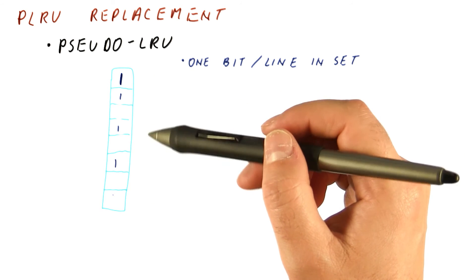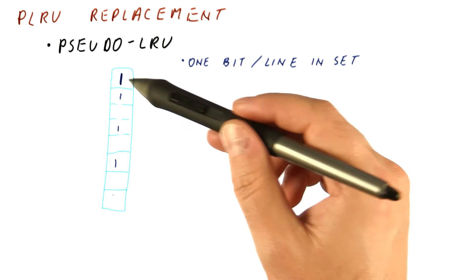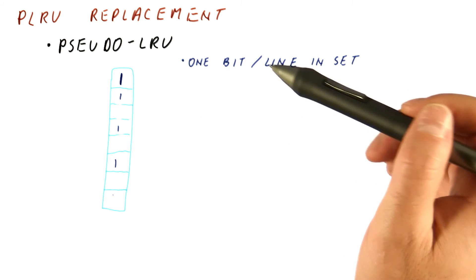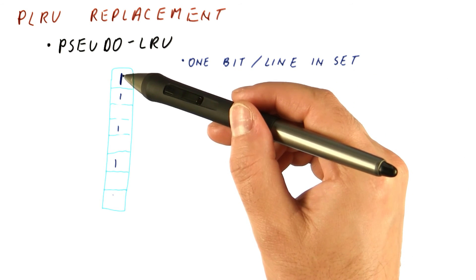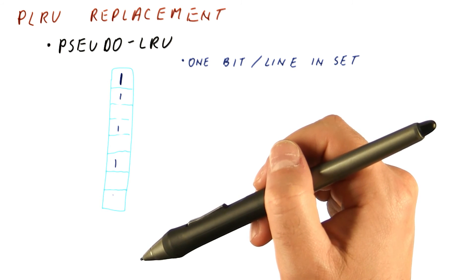This policy behaves somewhere between LRU and NMRU in exchange for using fewer bits. It's also very simple, because on a hit, all we have to do is set the bit that corresponds to the block, which can be done very quickly and efficiently.